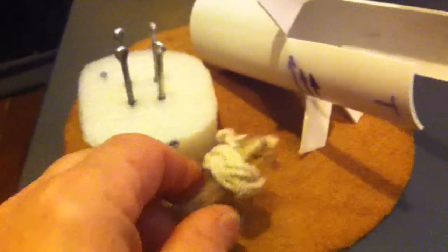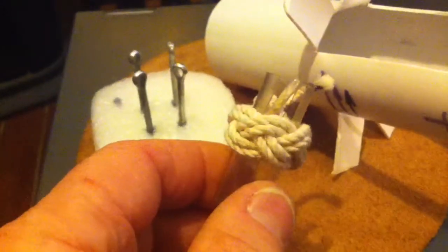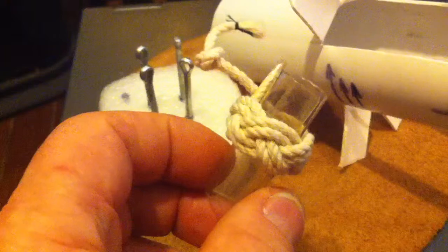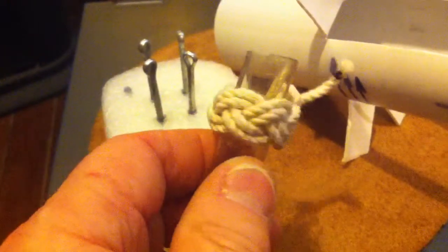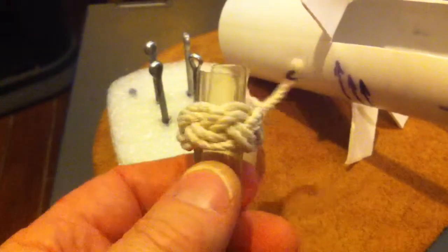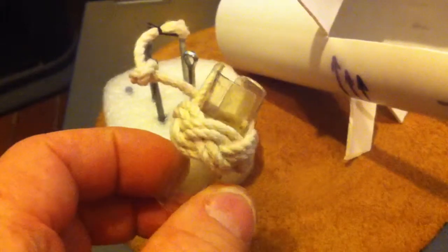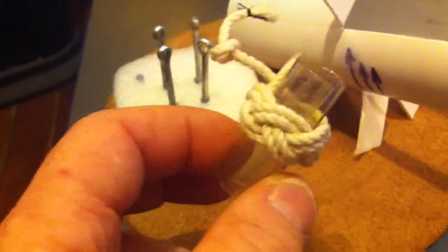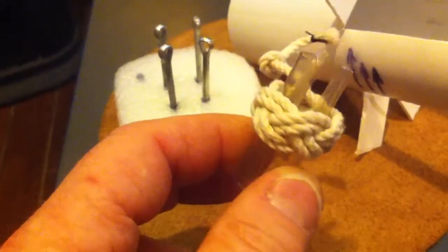This one, it all started out with this one. I was doing a lot of Turks head bracelets and then I wanted to do a ring, so I grabbed a little piece of tubing and tied a ring around it using it as a mandrel. And then I thought, well hey,